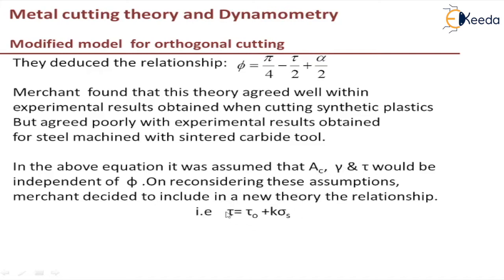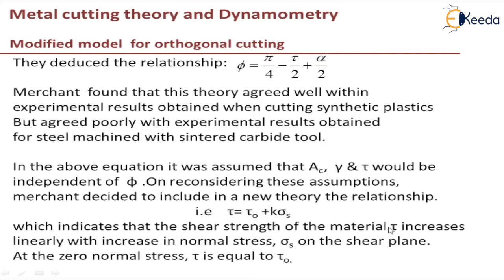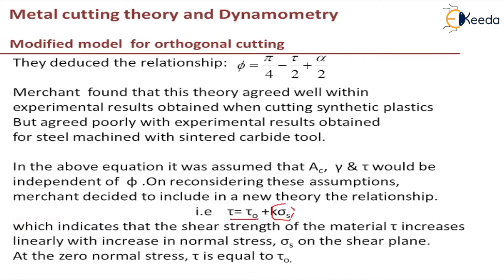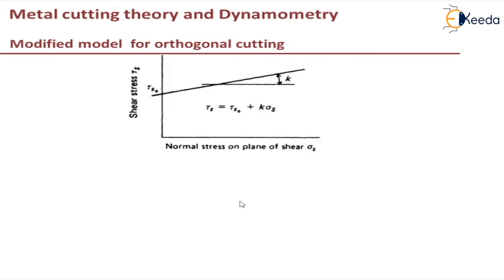In the new theory, they stated that τ = τ₀ + k·σs, that is shear stress equals initial shear stress plus k times normal stress on the shear plane. This indicates that the shear strength of the material τ increases linearly with increase in normal stress on the shear plane. If σs is zero, then τ = τ₀. This can be represented by a sketch where k is the slope of the line.